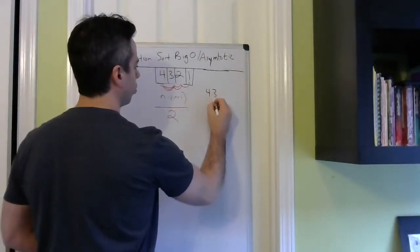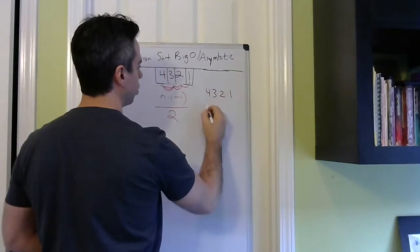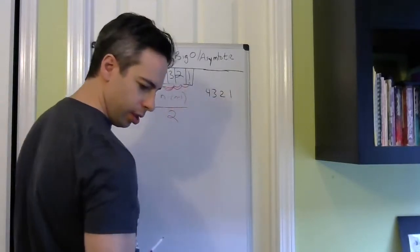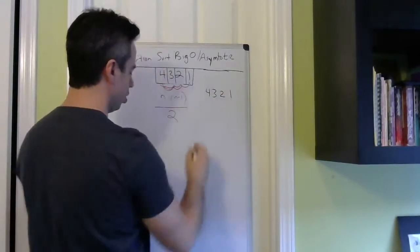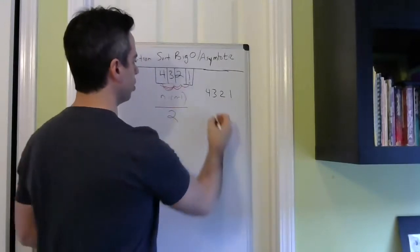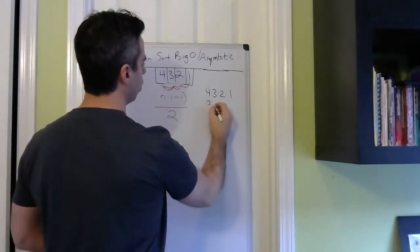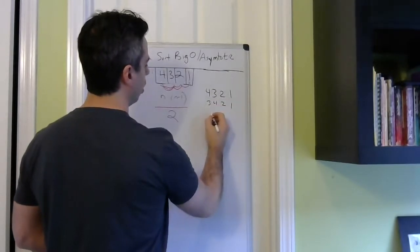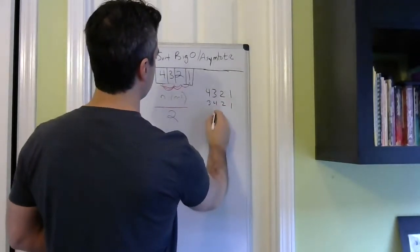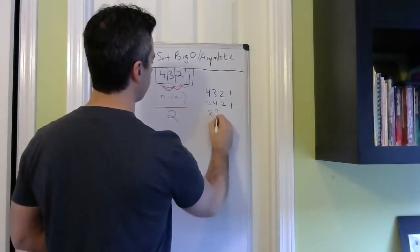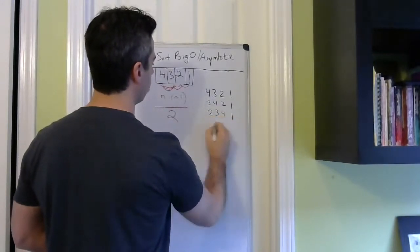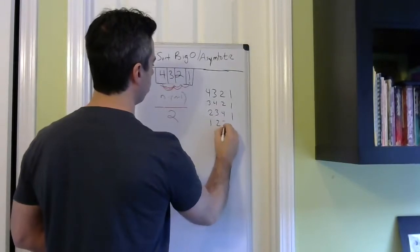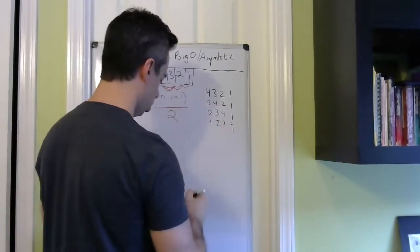So 4, 3, 2, 1. I'm just gonna draw it as it would be the iterations. So 3, 4, 2, 1. And then 2, 3, 4, 1. And then 1, 2, 3, 4.